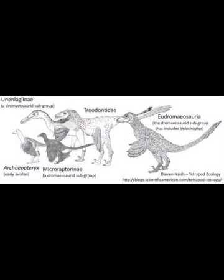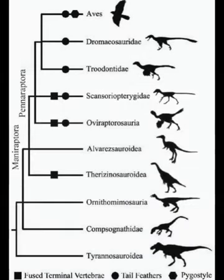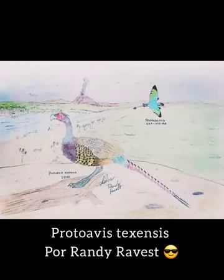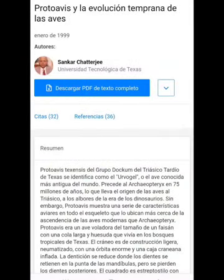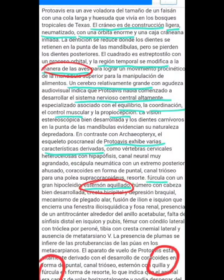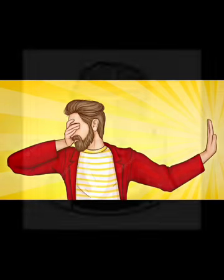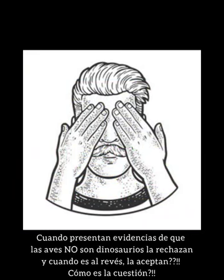Otros casos muy claros de especies basales se encuentran entre los dinosaurios del clado Maniraptora, que está plagado de animales parecidos a aves en épocas atemporales. Por ejemplo, está el controvertido fósil de Protoavis texensis de Sankar Chatterjee en el Triásico, 41 millones de años antes que el clado Maniraptora, que aún no se sabe exactamente qué es. En palabras del mismo Chatterjee, tenía un oído interno aviar y esternón aquillado como un ave orniturae, opinión que no es compartida por todos los paleontólogos, quienes solo asumen que se trataría de una quimera natural de fósiles de varios animales arrastrados por la corriente de un antiguo río.